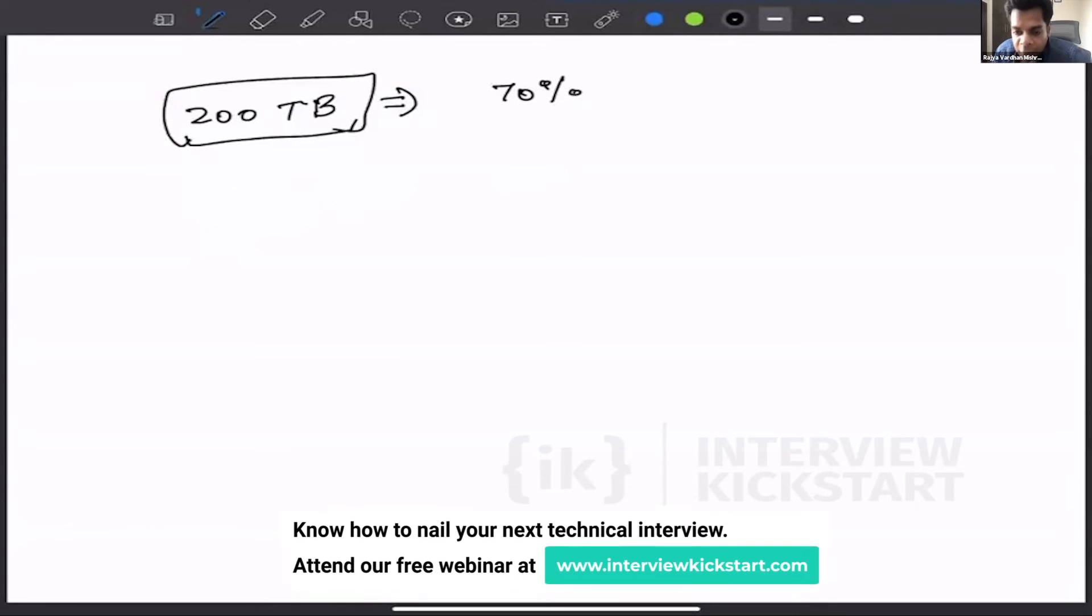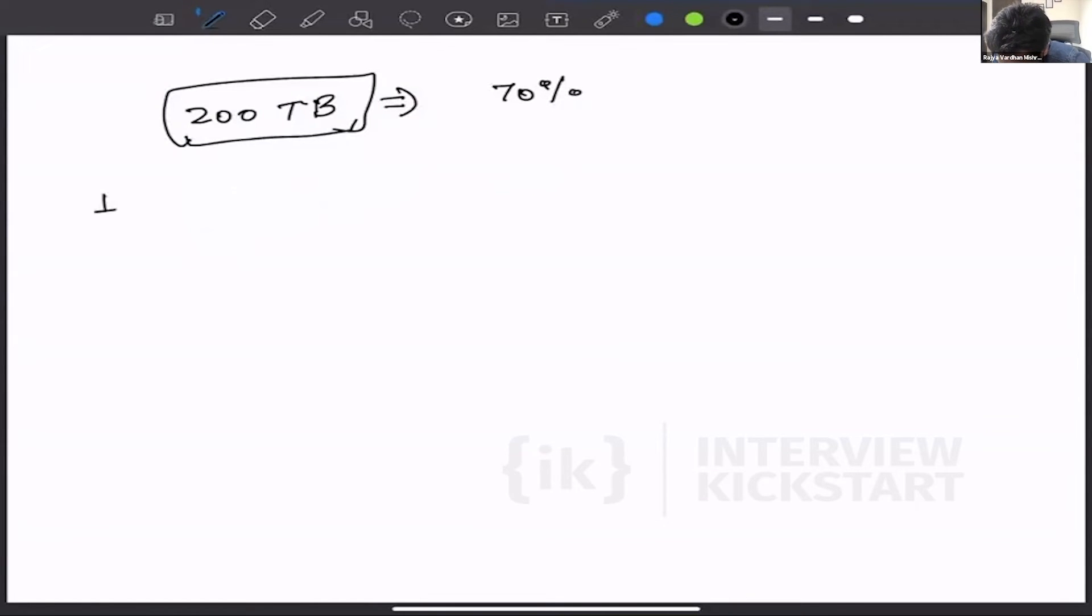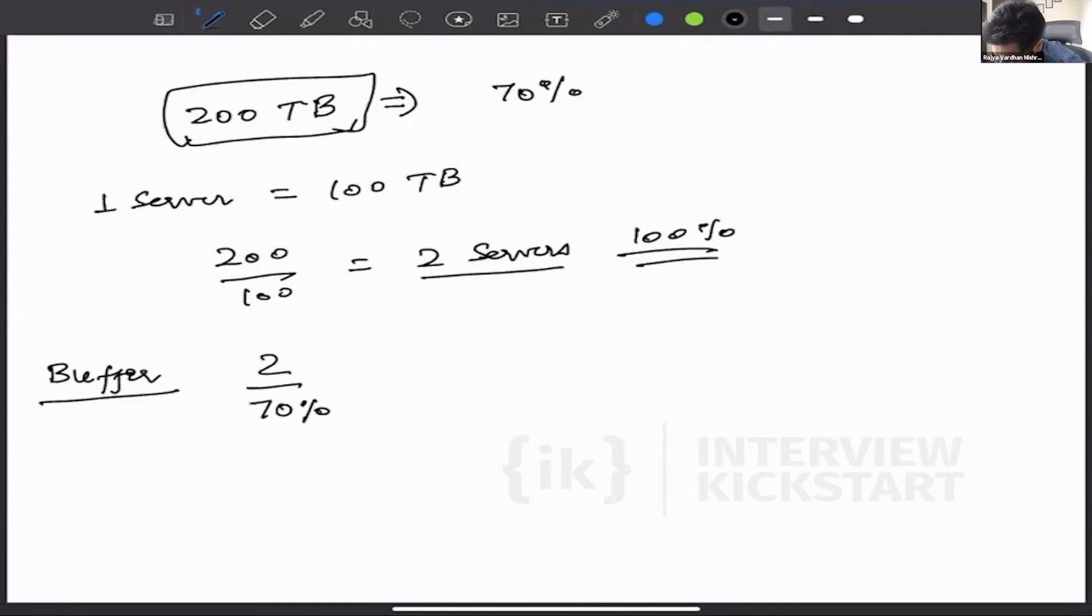With a very rough calculation, we can see that it will be around 300. So 200 terabytes is something we need to store, and we saw that one server takes 100 terabytes. That means we need just two servers—200 by 100, we need just two servers here. These two servers would be running at 100% disk capacity, so we need to have some kind of buffer here. You add the buffer, so you divide this 2 by 70%, which is three. You need three servers, but you also need to have replication here.